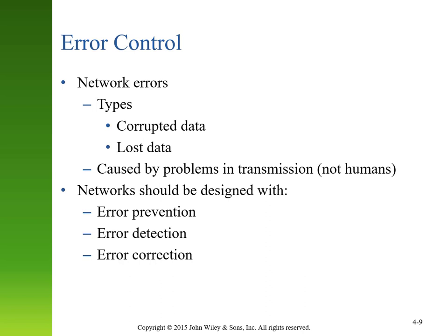There are three things we focus on with network errors: error prevention — stopping the error from occurring in the first place; error detection — knowing when an error has occurred so we can respond; and error correction — once we've detected an error, what can we do to fix it?